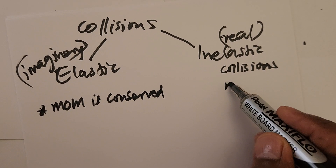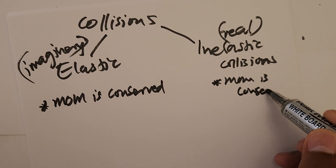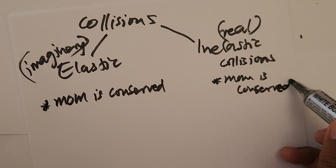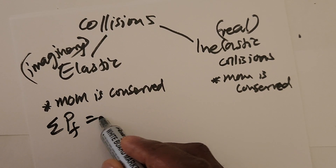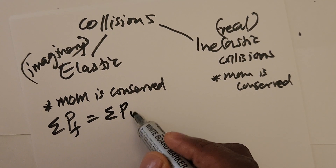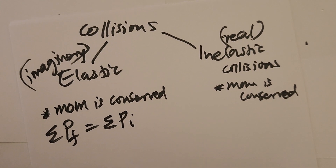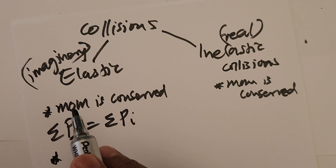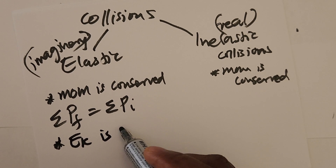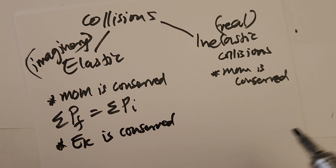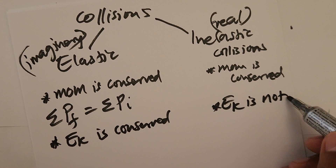In both types of collisions, momentum is conserved — meaning the total final momentum equals the total initial momentum. However, in an elastic collision, kinetic energy is also conserved. In an inelastic collision, kinetic energy is not conserved. That is the key difference between the two types.